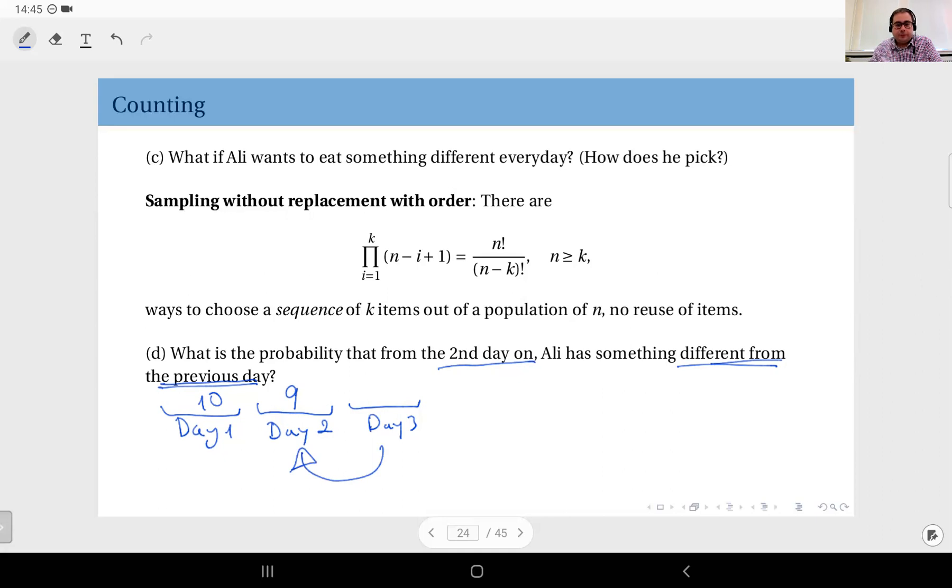But whatever he had on day number one, that comes back into the picture—it's now usable. Now I lose one from day two but I gain one from day one, so the number of choices Ali has is still nine on day number three.